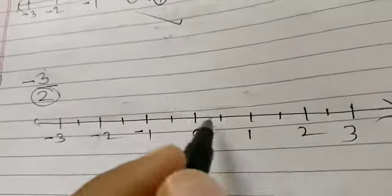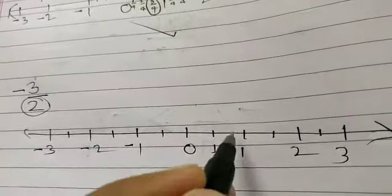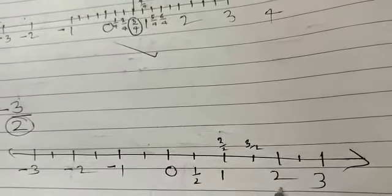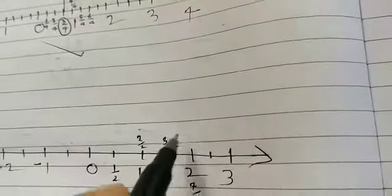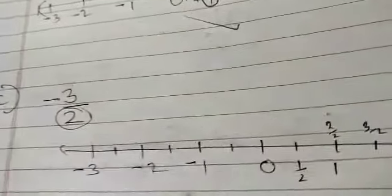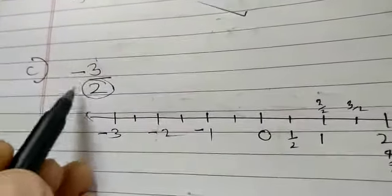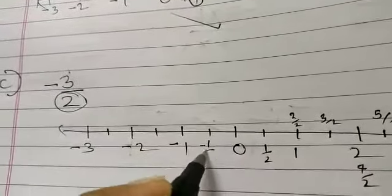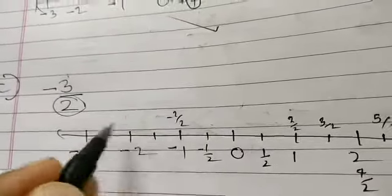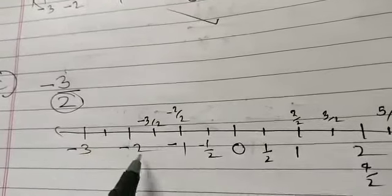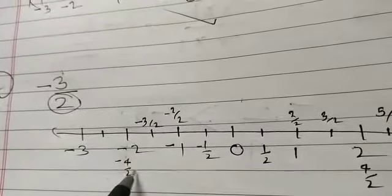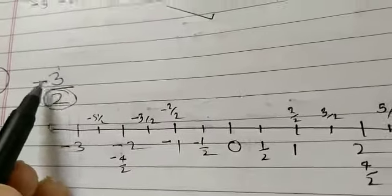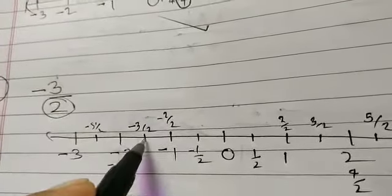So on the positive side: 1 by 2, 2 by 2, 3 by 2, 4 by 2, 5 by 2, and so on. But you have to show a negative number: minus 3 by 2. So on the other side you write minus 1 by 2, minus 2 by 2, minus 3 by 2, minus 4 by 2, minus 5 by 2, and so on. Since you have to show minus 3 by 2, you mark that point.